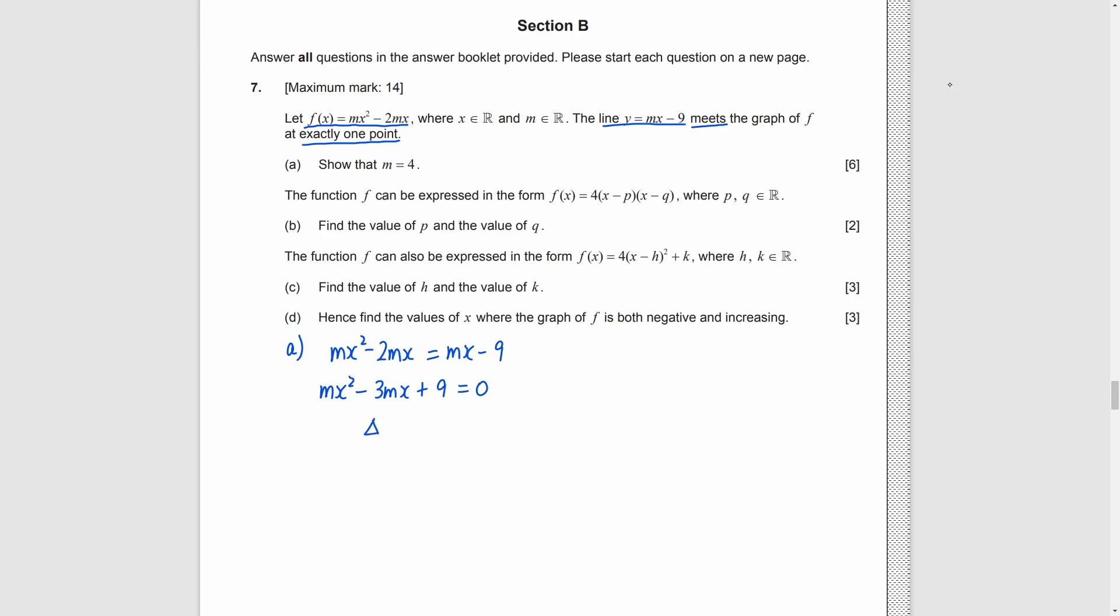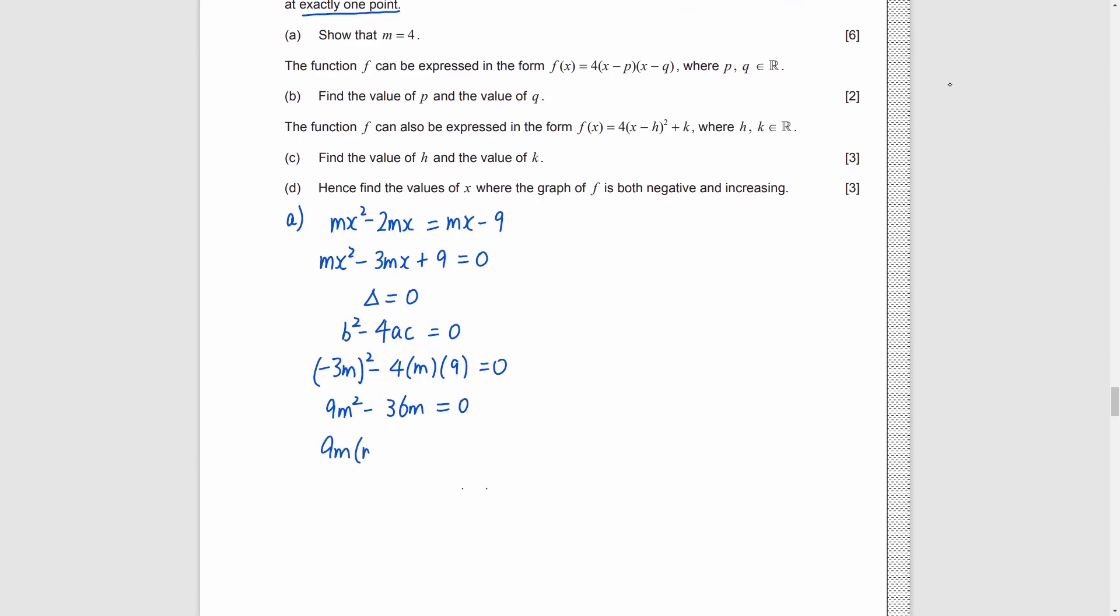So, the discriminant for this is 0. Discriminant is B squared minus 4ac. And by substitution, we get another quadratic equation in terms of m. Factorize it by taking out the common factor 9m. Finally, we get m equals 0. But if m is 0, f is 0. So, not possible. That means, m can only be 4.